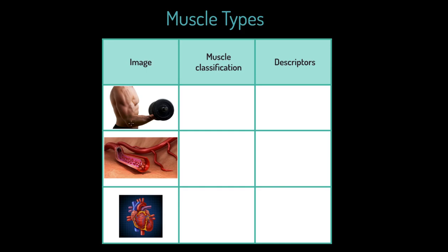We're going to chat about different types of muscles. We've got three images here. In this first image we're talking about muscles like this one — the bicep. You probably know that it inserts down onto the radius and that it causes flexion of the elbow. One thing you might not realize is that this is what we'd call a voluntary muscle — a voluntary muscle of the skeletal system. The fact that this muscle inserts on the radius is important because it connects to the skeleton.